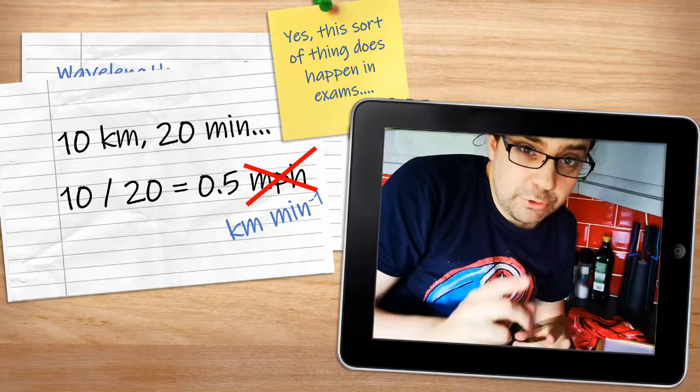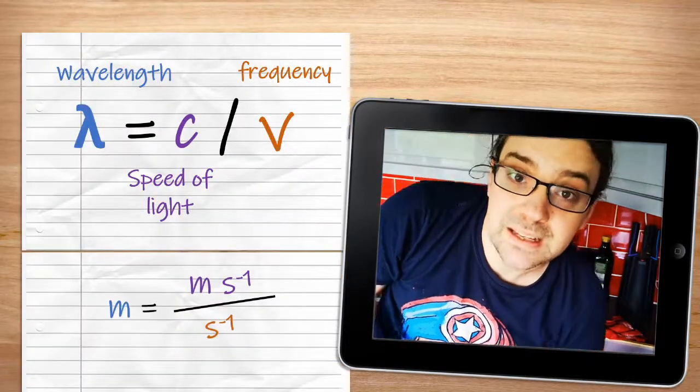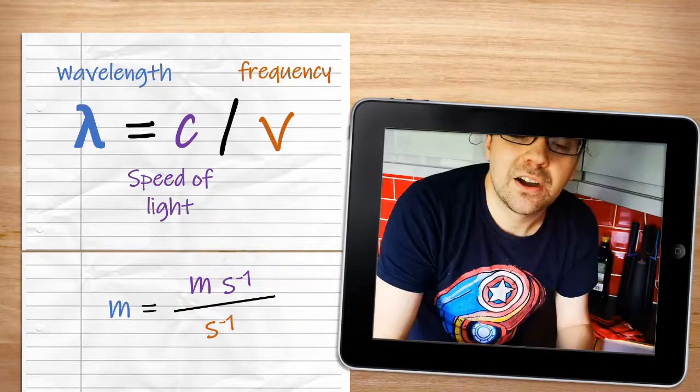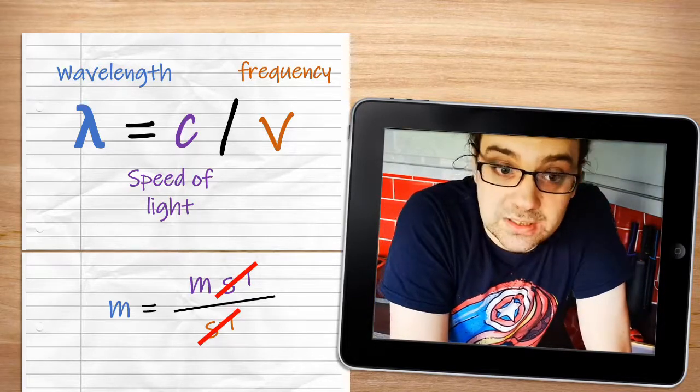So, if you have frequency in per second, you can convert to wavelength by taking the speed of light in meters per second, and dividing it by that frequency. The per seconds cancel, leaving you with meters, which is distance.